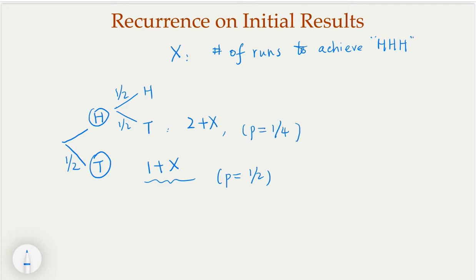Now in this case, that's good news — you have two heads and you flip again the third one. If you get a head, congratulations, you got it. And how many steps have you done? Three. This event happens with probability of one eighth. And of course, if you get a tail — that's miserable — you wasted three steps. Which means on the average you would require another x steps in order to get H, H, H, and this event happens with one eighth probability.